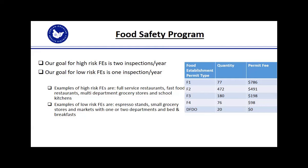When I say a multi-department grocery store, that's any of your big grocery stores — Fred Meyer, Albertsons, Costco, Safeway — they've got bakery, deli, produce, meat, seafood. Examples of low-risk food establishments are espresso stands, small grocery stores or markets with one or two departments, and bed and breakfasts. You can see in the table the permit types F1 through F4 based on risk: F1 is our highest risk, F2 is lesser in risk, but F1 and F2 are both high-risk categories. F3 and F4 are low-risk categories. The bulk of what we have in the district is F2 and F3 — very few at the lowest and very few at the highest risk.